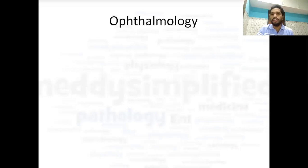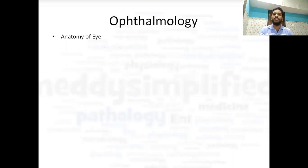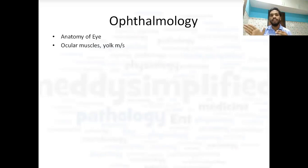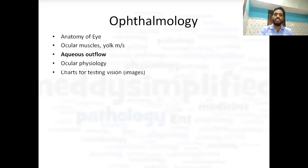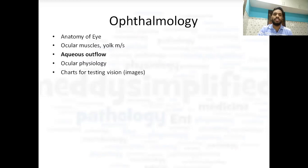Now talking about ophthalmology — once again a very important topic. In the last exam, 19 questions were asked from ophthalmology, so you can expect very good marks if you complete this subject. In ophthalmology, anatomy of the eye is very important. Then ocular muscles and yoke muscles — yoke muscles are two muscles working together in opposite directions doing the same movement. That is very important, along with aqueous outflow, which is important for knowing the basics of glaucoma. Then ocular physiology and charts for testing vision — Snellen chart and other charts. Images of these charts are important as you may be given an image to identify.